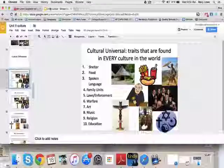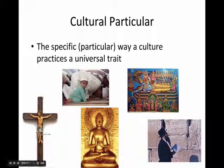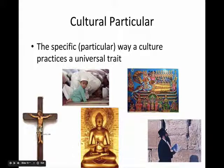That's what our next definition is: cultural particular. Even though every single culture has the same ten universals — religion, education, family units, food — every culture does it a little differently. The word 'particular' means a specific way that somebody does something. For instance, in the Catholic faith you go to church and pray to a symbol of Jesus on the cross. In the Muslim religion they pray at a mosque on their knees. In Buddhism they sit and meditate. In Hinduism they believe in multiple gods representing different things. Every culture has religion, but every culture does it a little differently.